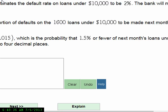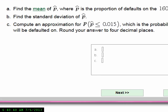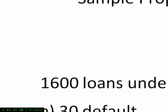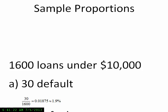Let's go out to Word to capture what I'll be saying so you can have a visual as well as an audio. So what I have here is 1,600 loans that are under $10,000. Let's say 30 of them default on this one sample of 1,600 loans. Then it turns out when you have 30 default out of 1,600,